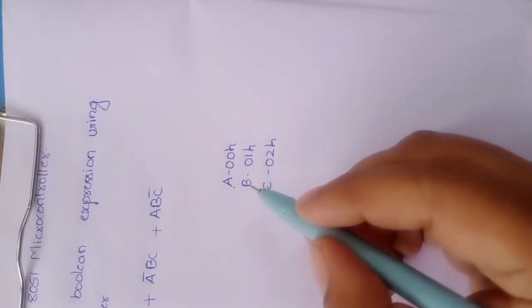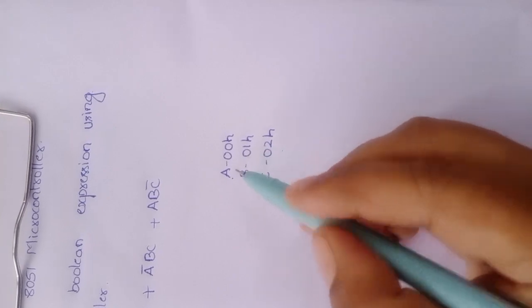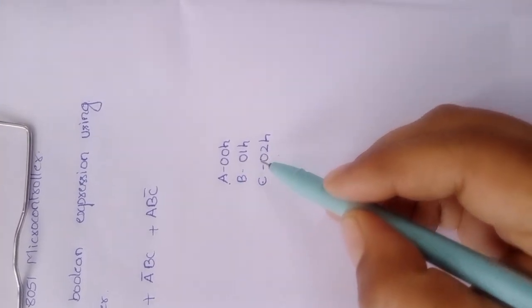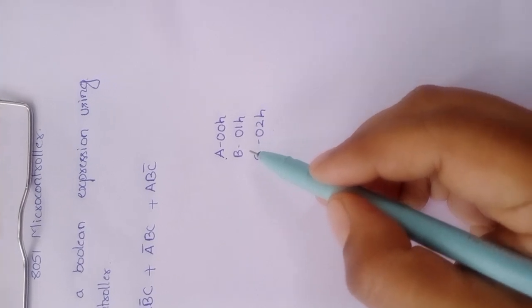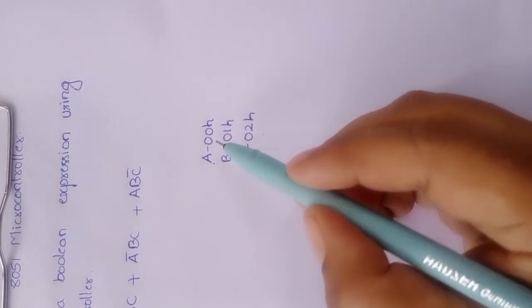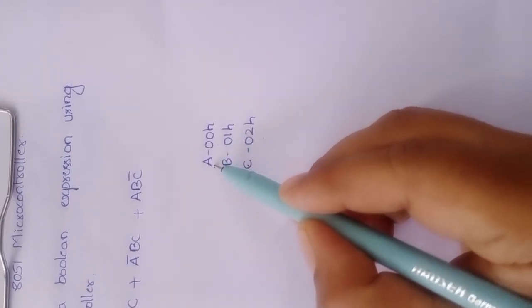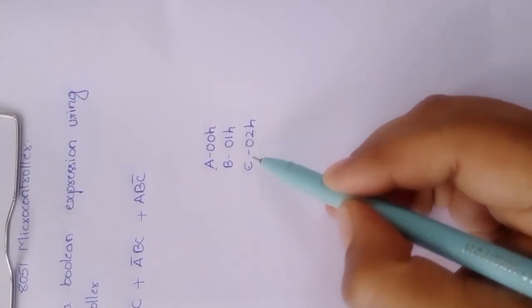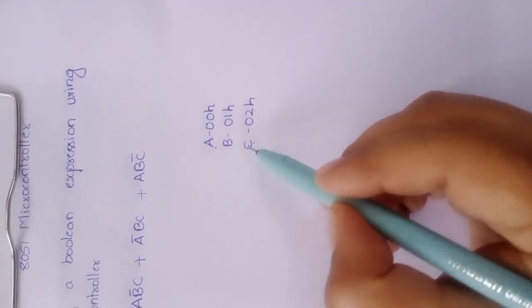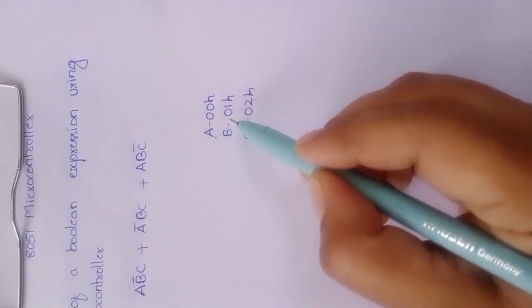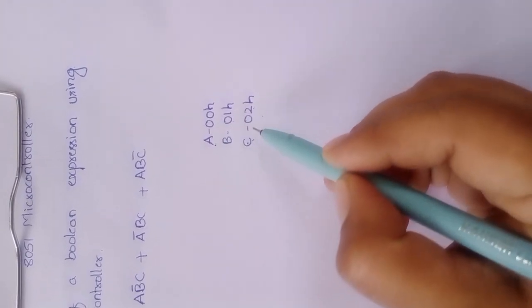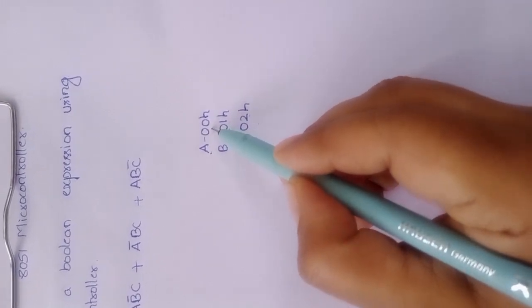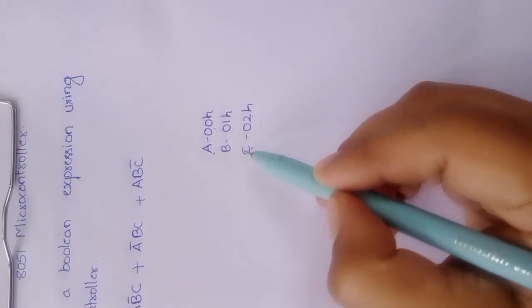There is no single instruction to directly assign a boolean variable to a memory location. As a programmer, we understand that wherever 00 is used it means variable a, wherever 01 is used it means variable b, and wherever 02 is used it means variable c. From now onwards while writing the program, I will use these addresses accordingly.